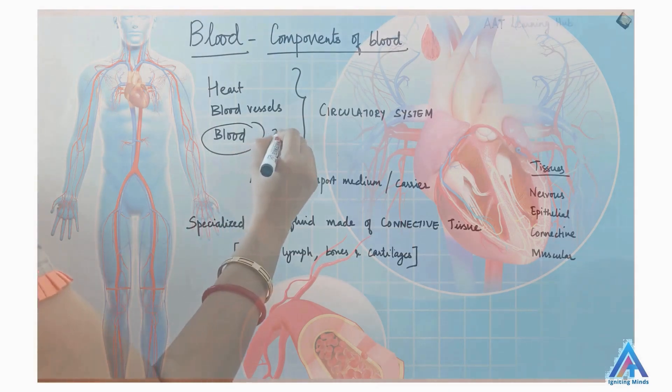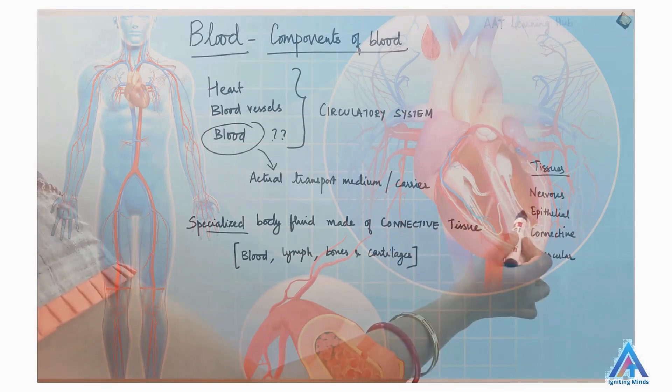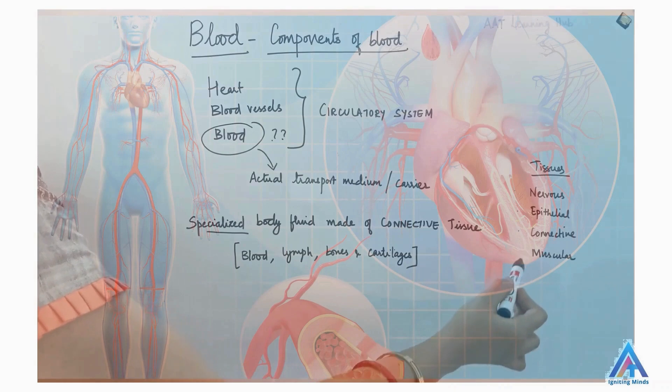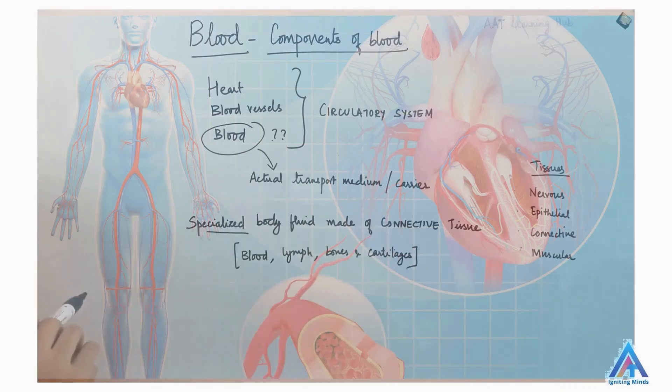So what is blood? Blood is a specialized body fluid made of connective tissue. Connective tissue, as the name implies, connects and supports various tissues and organs. There are four types of tissues in our body: nervous tissue, epithelial, connective and muscular. So blood is a type of connective tissue.